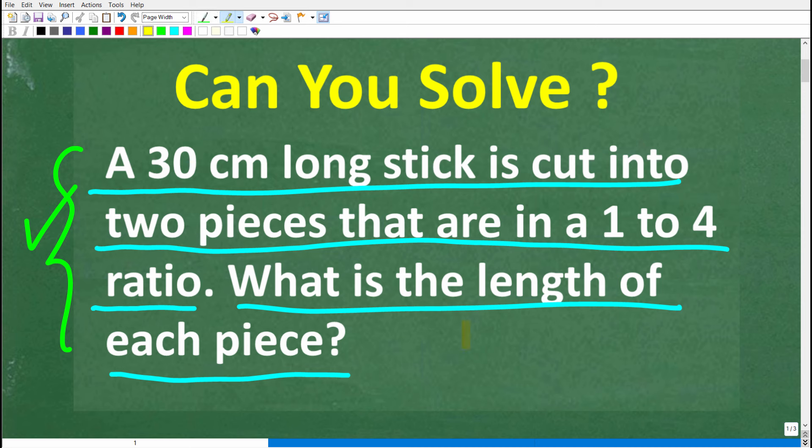All right, now before I show you the answer, let's take one more look at the question. So a 30 centimeter long stick is cut into two pieces. Now these two pieces are in a 1 to 4 ratio. So the question is, what is the length of each one of these pieces?